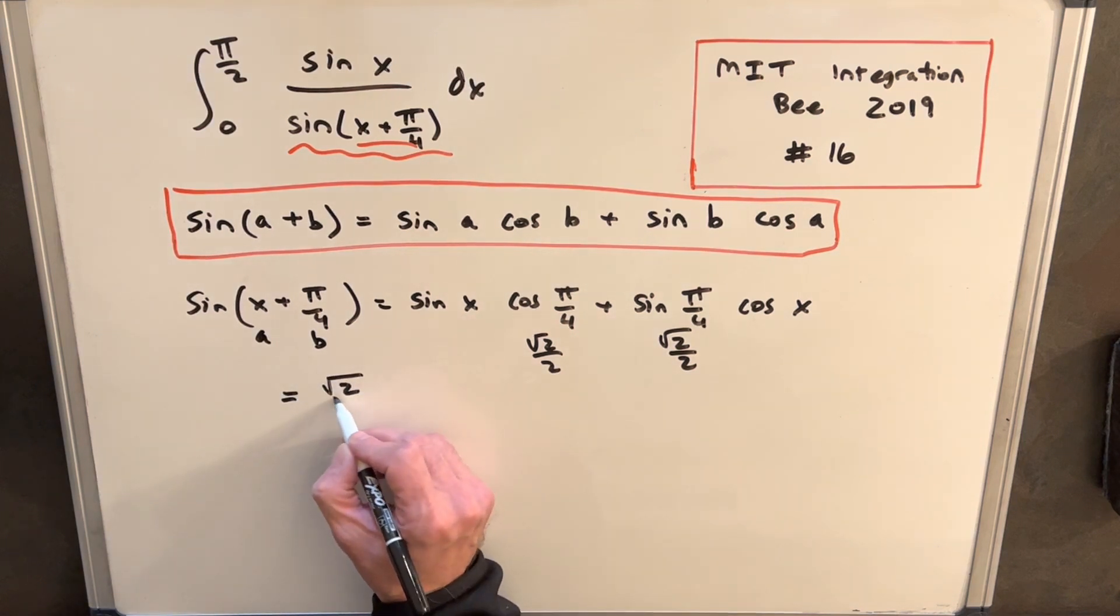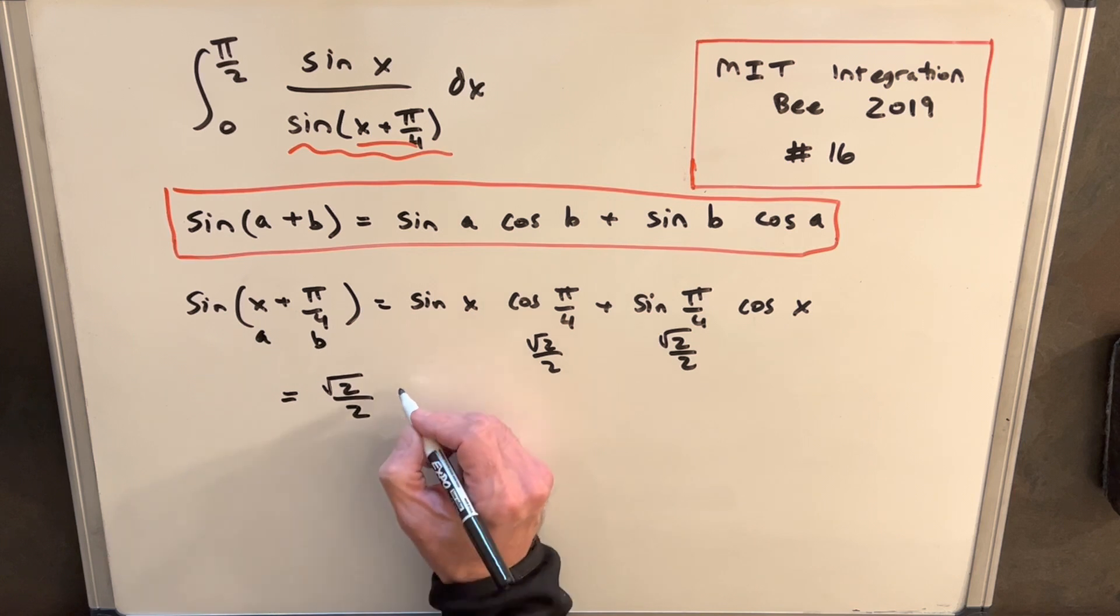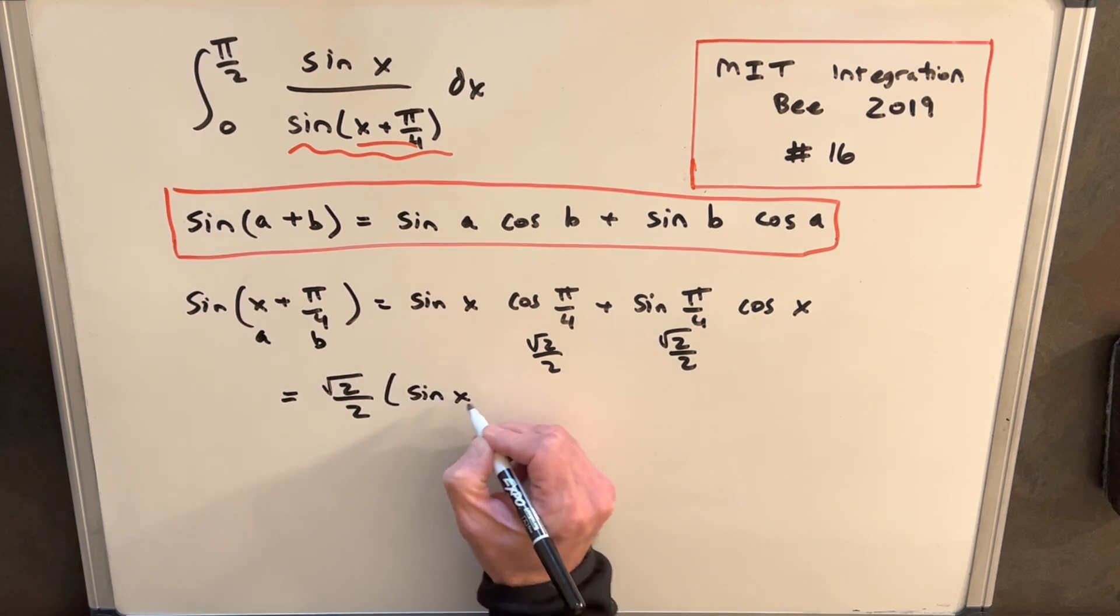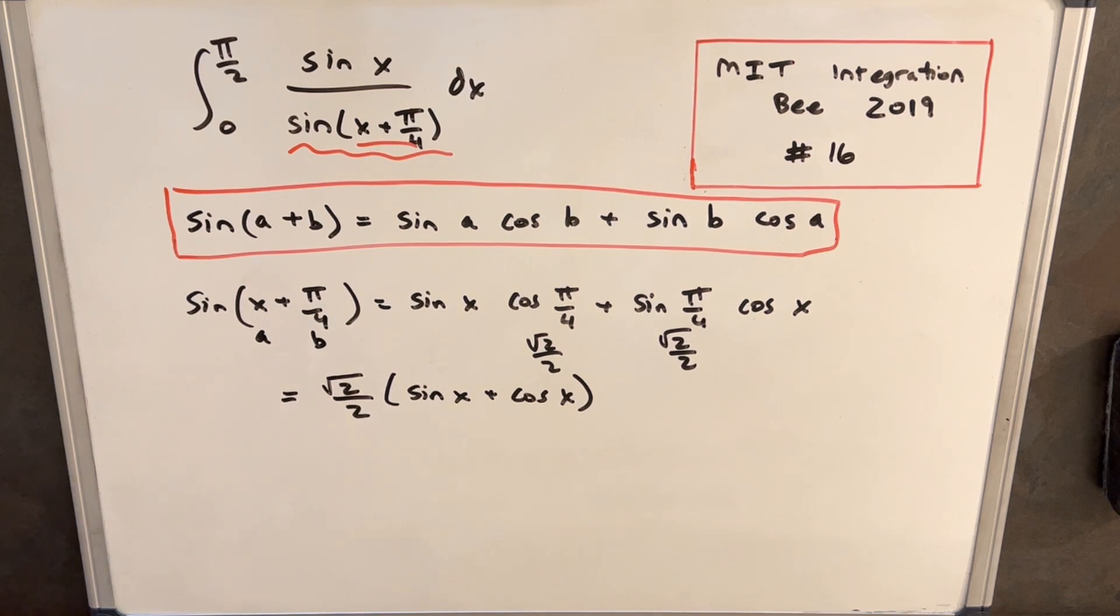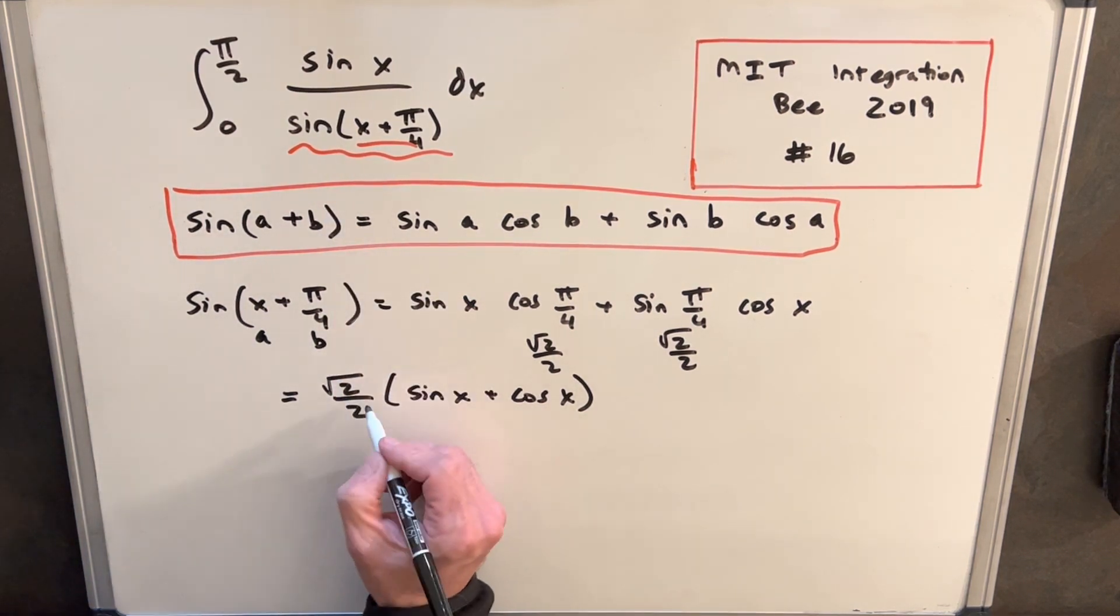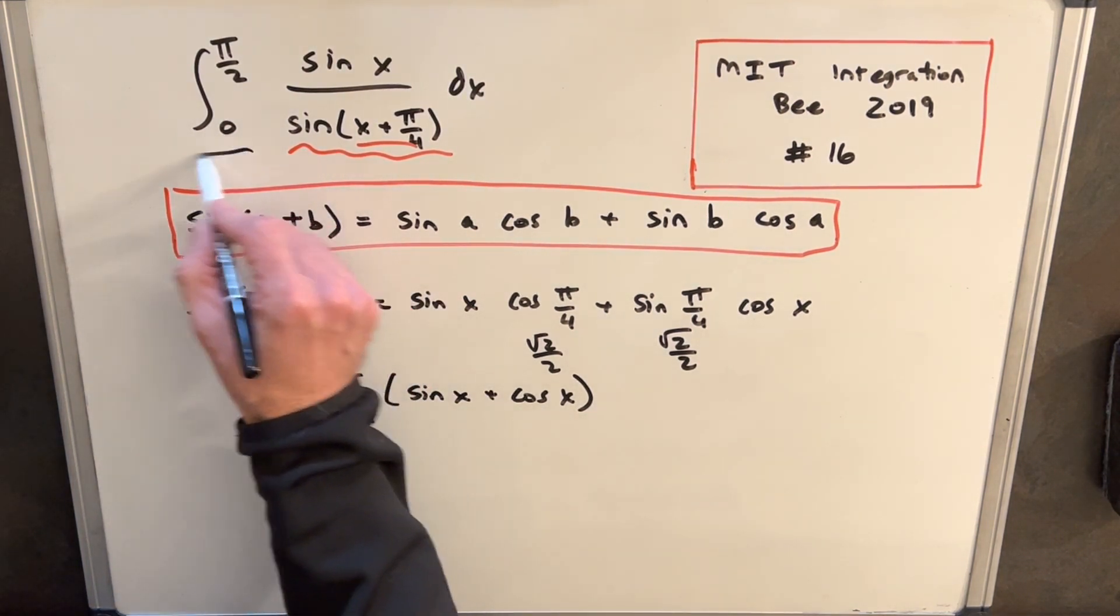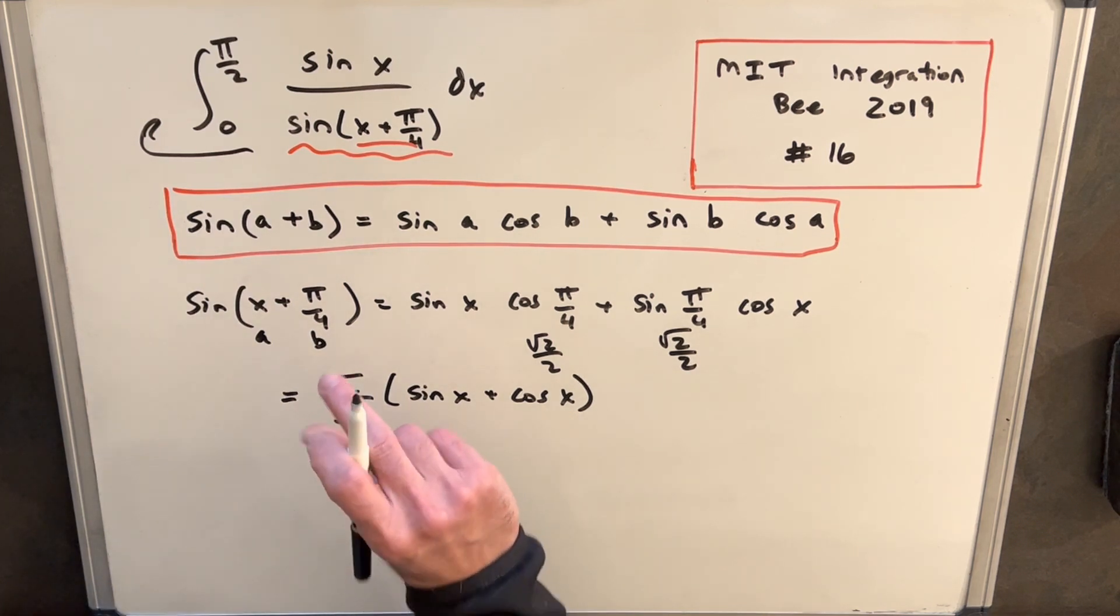So that means we're going to have a square root of 2 over 2 that we can factor out of each of these, and so we can rewrite this as square root of 2 over 2 times sine x plus cosine x. So what I'm going to do is plug this back into the integral, but we can pull this constant part out front and put it here just as a reciprocal.